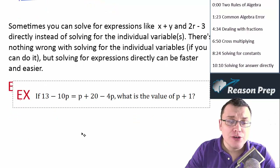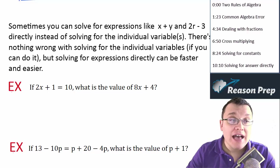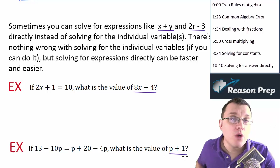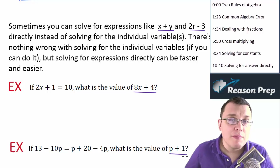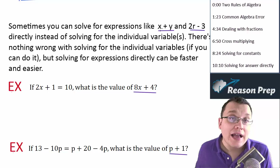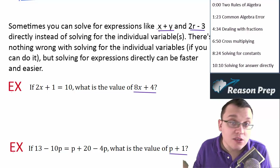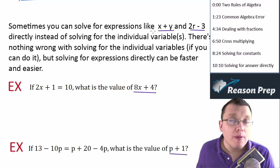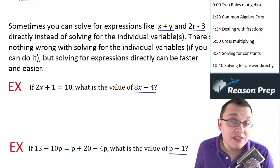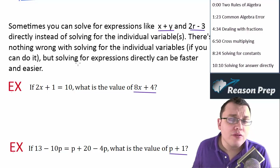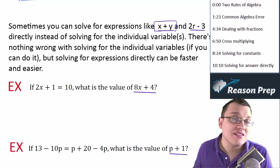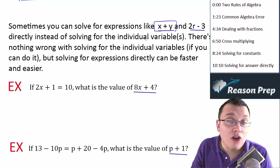Sometimes on the SAT they don't ask what x or y equals — they ask for something like 8x + 4, or x + y, or 2r − 3, or p + 1. In these cases you could solve for the individual variable and then perform the operation. But there are two problems: you might make a mistake and give just x when they want x + y. Also, sometimes you can't solve for the variables individually at all, but you can solve for the expression together. And third, it's often just faster and easier to solve for those expressions directly.